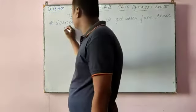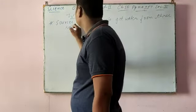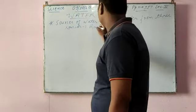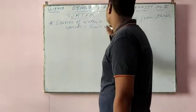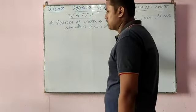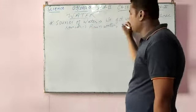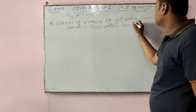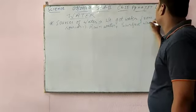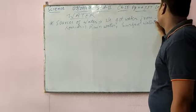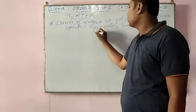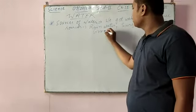So to recap: the first source is rainwater, the second is surface water, and the third is groundwater.